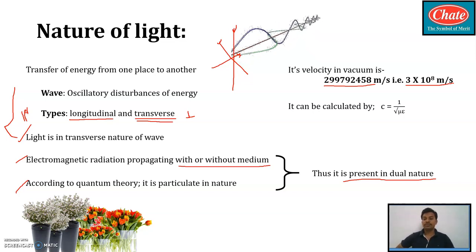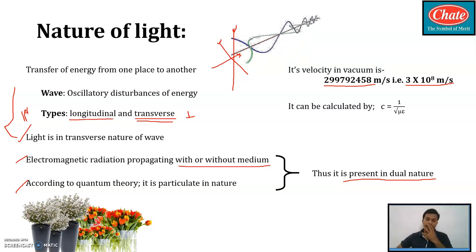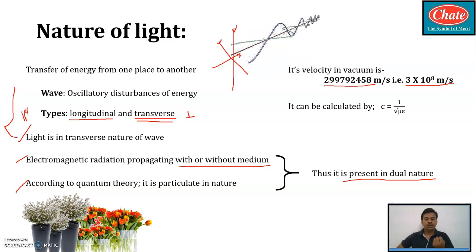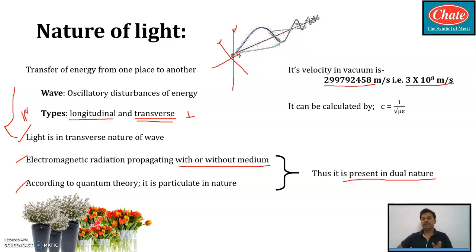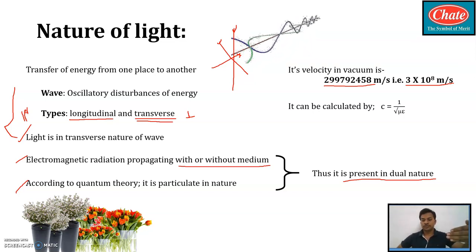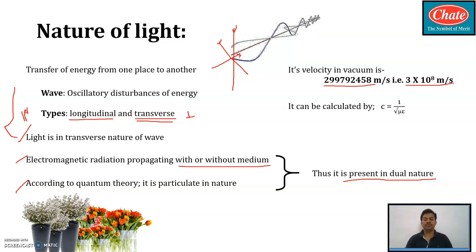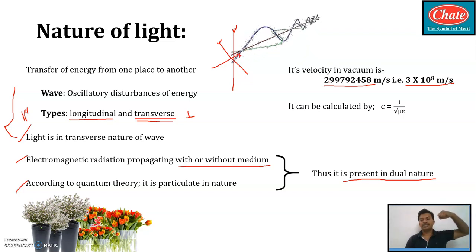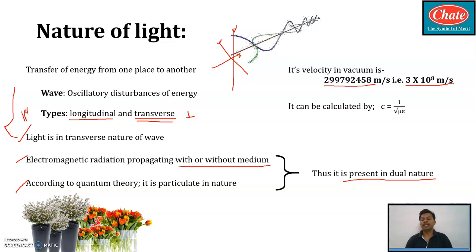In kilometer form, that is 3 lakh kilometers per second. Imagine the speed of light — in one second, light travels 3 lakh kilometers. In comparison, sound travels at around 300 meters per second, roughly one-third of a kilometer per second, while light travels 3 lakh kilometers per second — light is very much faster than sound. A best example is lightning in the sky: we first see the lightning, and then after a few seconds we hear the thunder, because light speed is faster than sound.